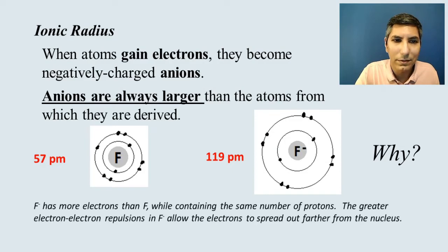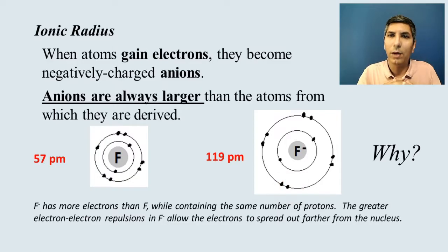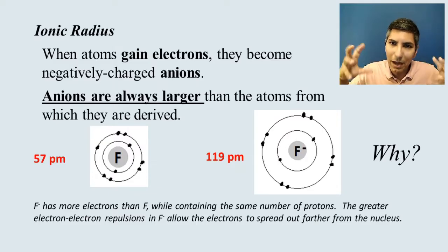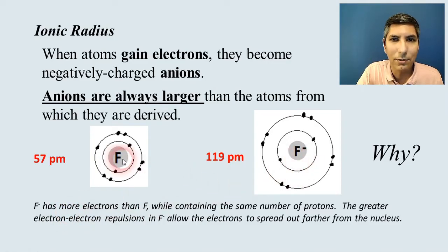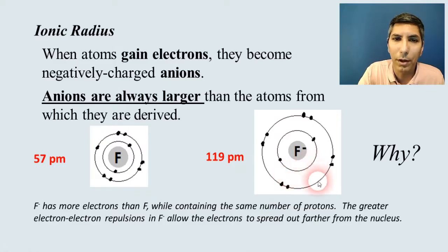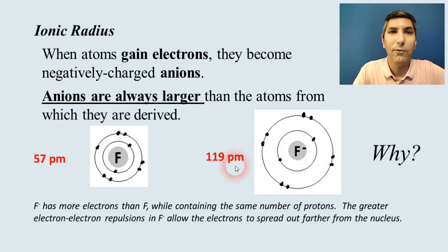Think about it in terms of the electrons. The fluoride ion has more electrons than the fluorine atom, even though they have the same number of protons. With more electrons, you have more electron-electron repulsion — electrons repel each other and try to spread out farther from each other. Those greater electron-electron repulsions in fluoride allow the electrons to spread out farther, and as you can see, it's a big factor.